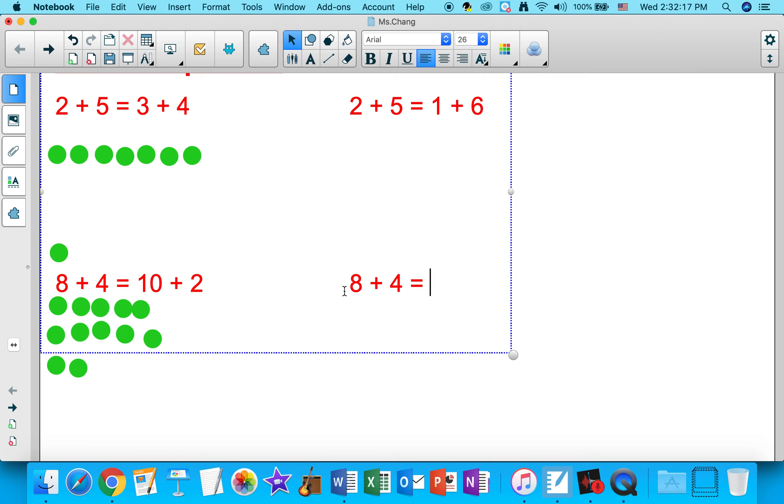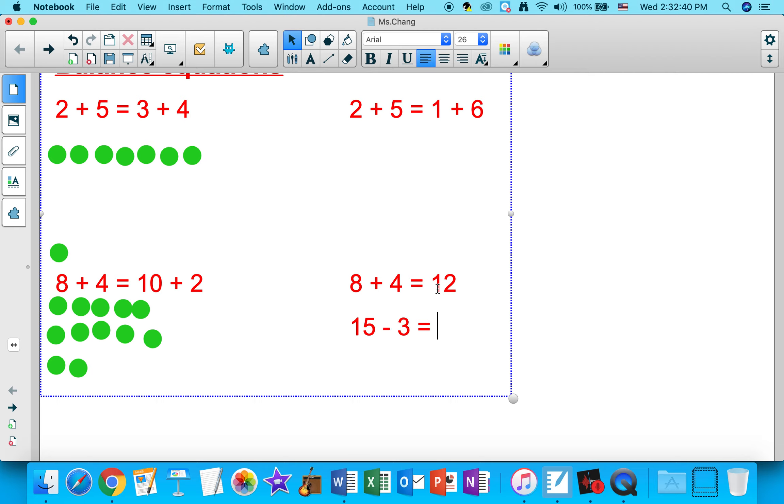We can also use a subtraction to find equivalent expressions. So 8 plus 4 equals 12, and 15 take away 3 is also equal to 12. So these two expressions give you the same answers, which means we can say that 8 plus 4 equals 15 take away 3.